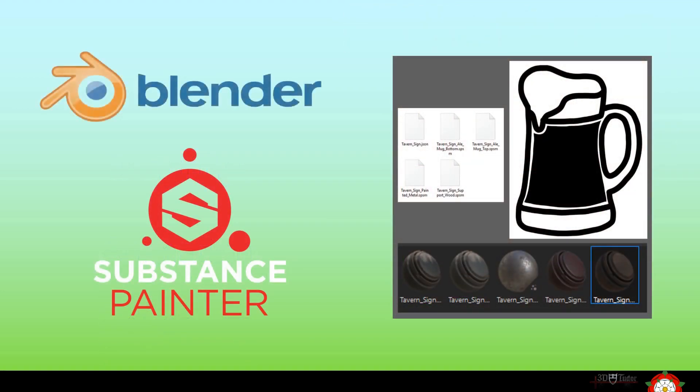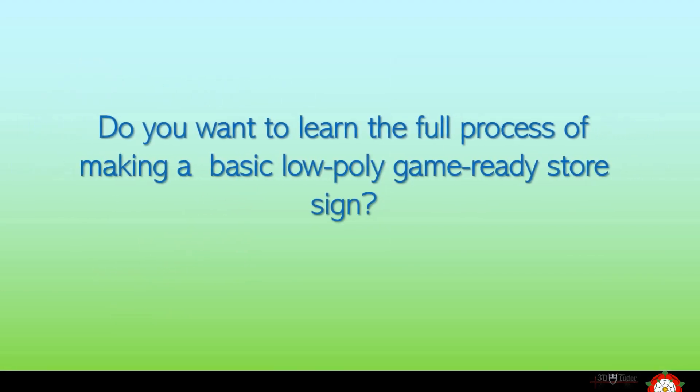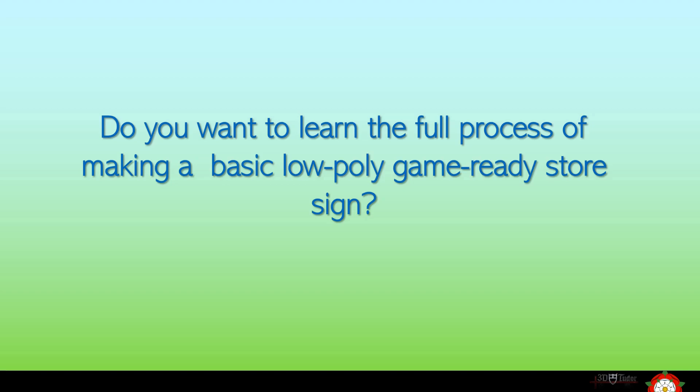The only pieces of software we will be using in this class are Blender and Substance Painter and the class is aimed at beginners to both. All supporting files will be supplied to help you on your journey to create a low polygon sign. This class will give you the key skills to creating game ready models.